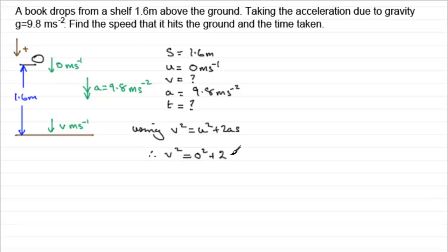0 squared plus 2 times the acceleration A, which is 9.8, times S, the displacement, which is 1.6. And if you do this, you'll end up with V squared equaling 784 over 25. And we would want to square root this to get V. So V would equal the square root of 784 over 25, which comes out to 28 over 5. Or you could write it as a decimal, which would be 5.6 metres per second.